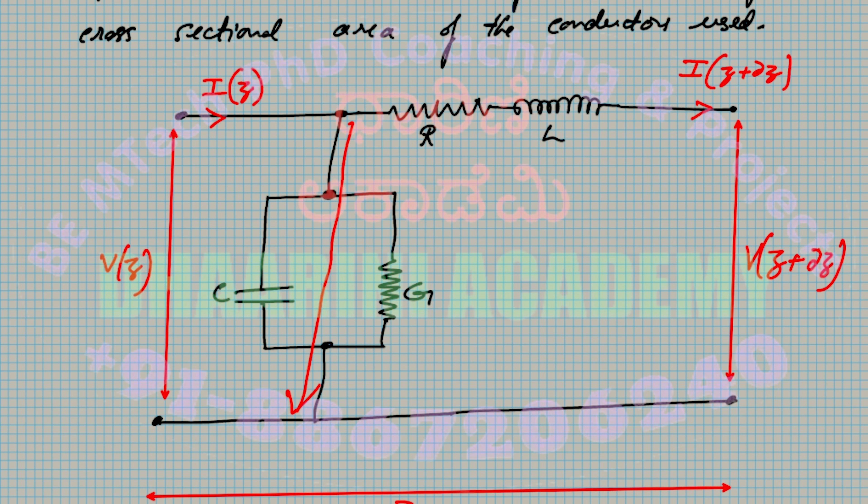The component placement determines which current expression to use — placing R and L closer to the end determines whether I(z) or I(z + δz) appears. The ultimate concept remains the same regardless of assumption. This equation setup will be simplified further by assuming δz is very small, which we will resume in the next session.